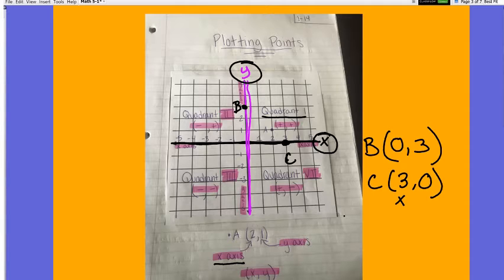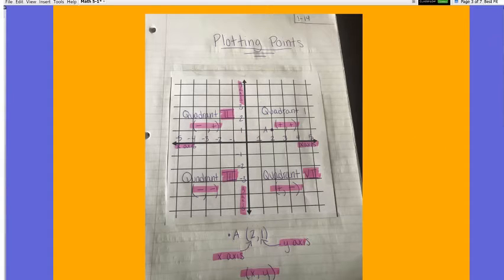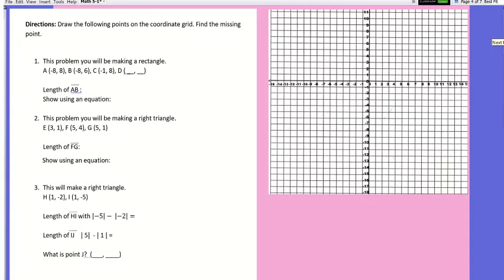Now that you have these notes and a good refresher, we're going to start the lesson. I modified the lesson a little bit. This is the sheet that you should have. If you don't have this right now, pause the video, grab the sheet, and follow along with me. Now we are going to draw the following points on the coordinate grid and find the missing point. This problem is a rectangle.